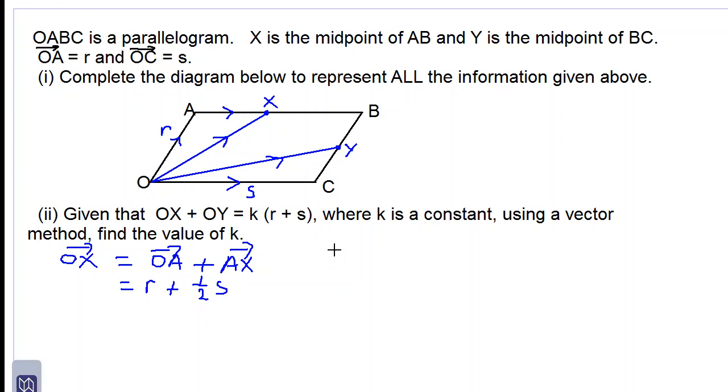Okay, let's work out OY now. OY is equal to OC plus CY, and CY is equal to one half of OA, which is one half of r.